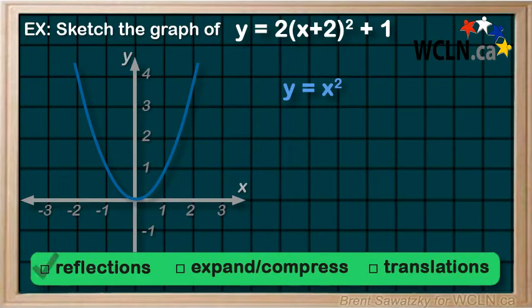We note that we have no reflections, so we'll move on to our vertical expansion. Since it's a vertical expansion by a factor of 2, that means that any of the points in here, their y values would be multiplied by 2.